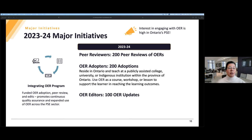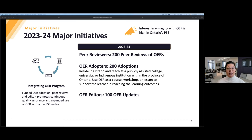The Integrating OER Program encourages and incentivizes educators to report their adoptions of Open Educational Resources from the Open Library. We have a goal to collect 200 adoption reports, and we offer adopters a stipend of $300 per Open Educational Resource adopted, up to a maximum of five. Following the adoption, adopters must submit a report detailing the OER they adopted, the course in which it was used, and the cost or estimated cost of the resource it replaced.